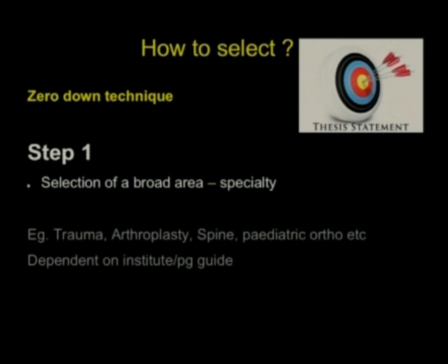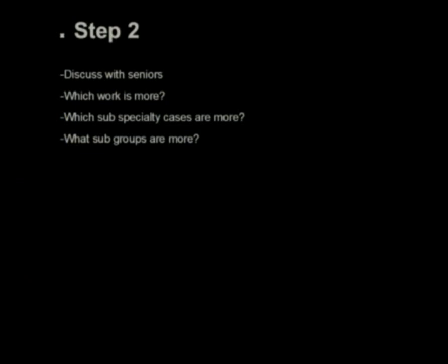So, how to select the topic? Most of the time, the topic is given to us for our thesis, but you can just go through it so you can teach your juniors and the next rung. How to select? Zero down technique. Step one, select a broad area. Broad area or specialty, for example, trauma, arthroplasty. So, whatever you feel in first one or two months, or whatever you want to give to your junior, give him a broad topic. That becomes your first keyword.